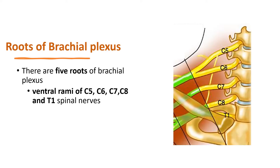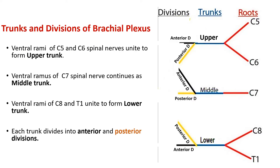There are a total of 5 roots of the brachial plexus — the ventral rami of C5, C6, C7, C8, and T1 spinal nerves. After roots, the trunk and division part comes. In total there are 3 trunks: upper, middle, and lower.